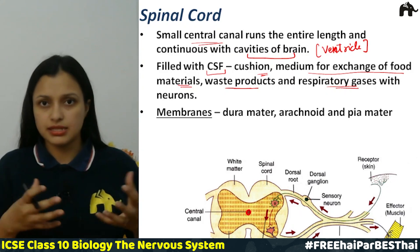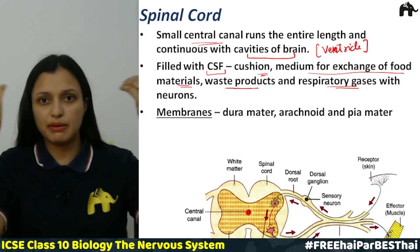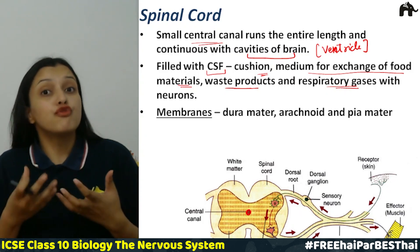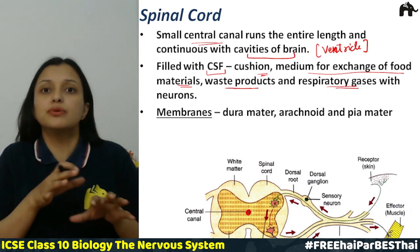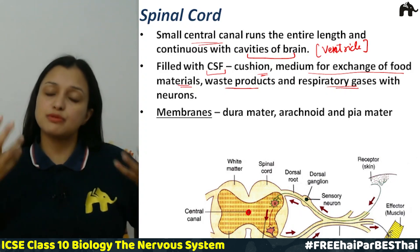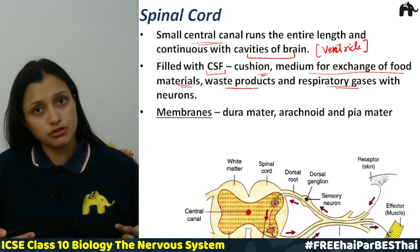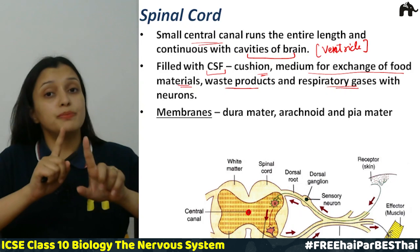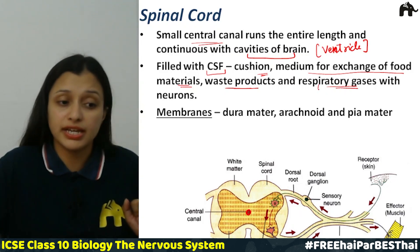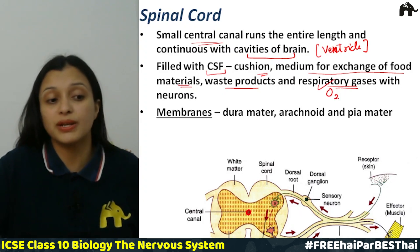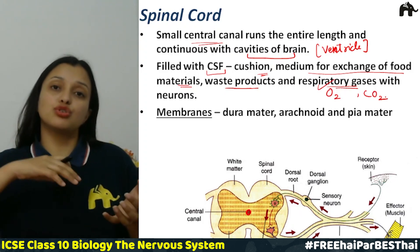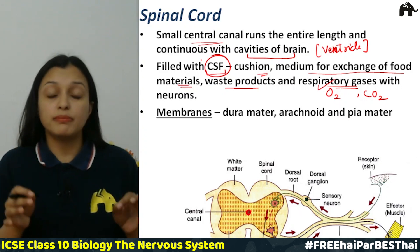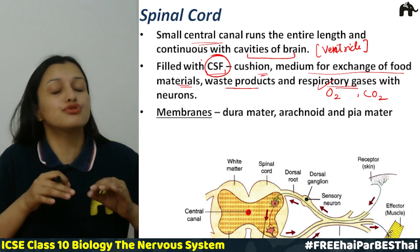The cerebrospinal fluid is a medium for exchange of food, nutrients, waste products, and respiratory gases with the neurons. Just like every cell in the body, the brain and spinal cord also need oxygen and nutrients, and need to expel waste products including carbon dioxide. All these functions are performed by cerebrospinal fluid, making it super important.